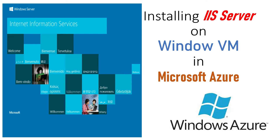Hello everyone. In this video we are going to learn how to provision a Windows virtual machine in Microsoft Azure, and then we will also see how to install a web server — that is IIS server — onto this machine. We will then try to access our virtual machine using a browser, so we keep our HTTP port open. We will see the default page, and also demonstrate how to make changes to the default page.